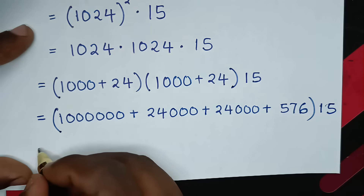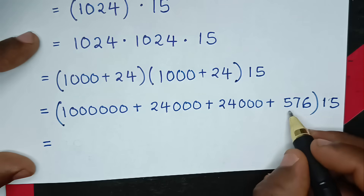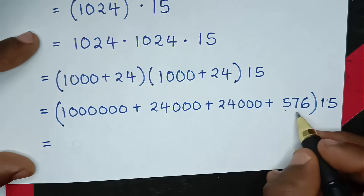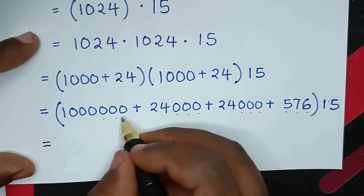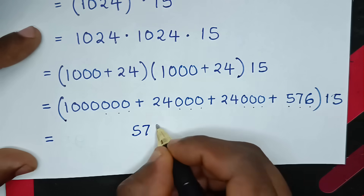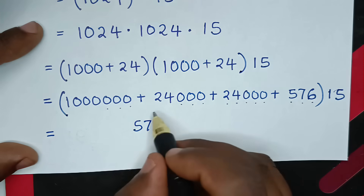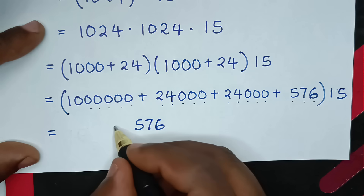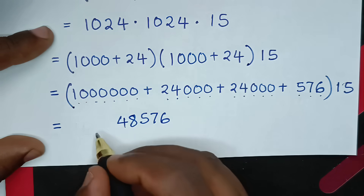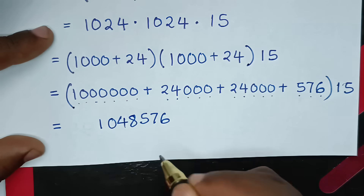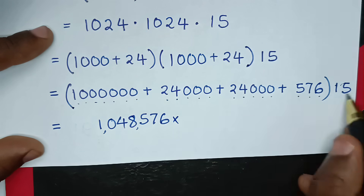Then in the next step, we add these together. 576 plus 24,000 plus 24,000 plus 1,000,000: combining the thousands digits gives 48,000, carrying gives 1,048,576. Then times this 15.